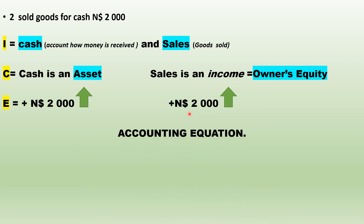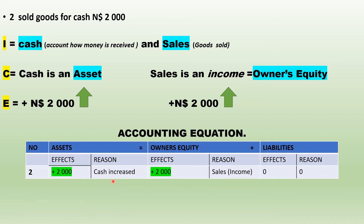On the accounting equation, this transaction is shown as follows: asset has gone up by 2,000 — reason: cash increased. Owner's equity has also gone up by 2,000 — reason: sales, which is an income. Remember, under owner's equity we write the account name such as 'sales' rather than just saying increase or decrease. I hope that is clear so far — feel free to comment questions below.